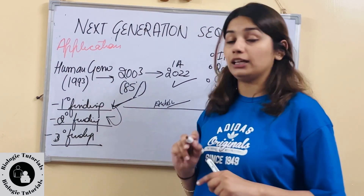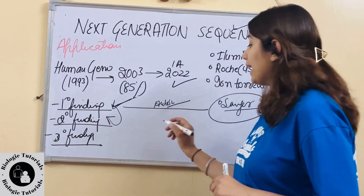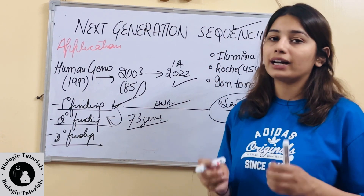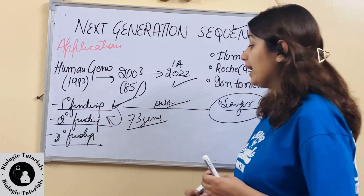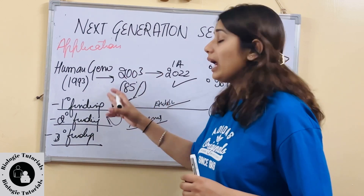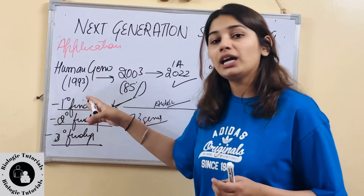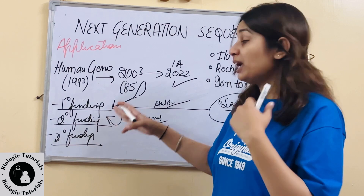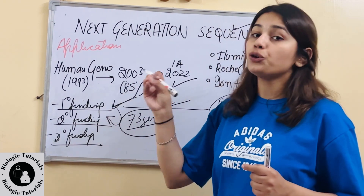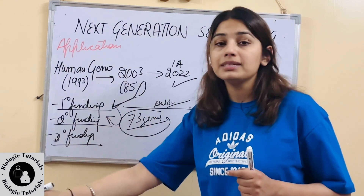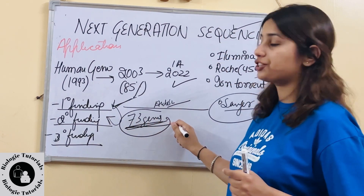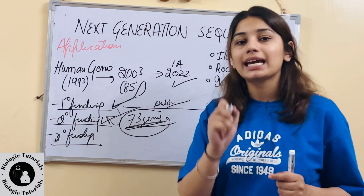Secondary finding mein kya hai? Ki aise 73 genes hain jo American College ki ek organization ne diye huye hain. Ki agar aapko primary finding mein kuch nahi mila, aur person mein symptoms aa rahe hain, toh un secondary finding ki taraf ja sakte hain. Jahaan pe ye jo 73 genes hain — jo risk factor genes hain, jo kal ko us bimari ke liye un symptoms se associated ho sakti hain — wohan pe in 73 genes ka specifically test karte hain. Yeh jo aati hai humari secondary finding.